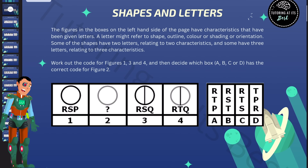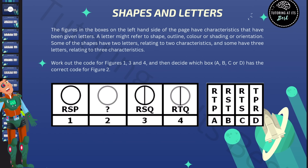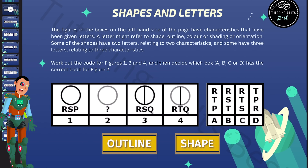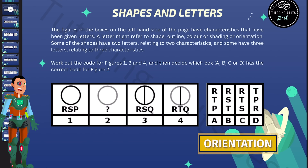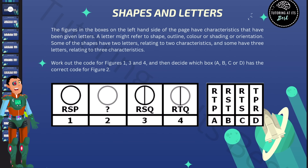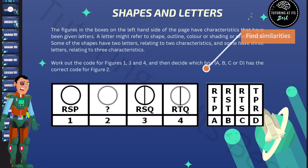So what are shapes and letters? Well, as it states above, the figures in the boxes on the left-hand side of the page have certain characteristics that have been given letters. Now it could refer to a shape, an outline, a colour, shading or even orientation. So some of the shapes have two letters relating to two characteristics and some may even have three. So it's your duty to go ahead and unravel the secrets to find out what shape relates to what code.